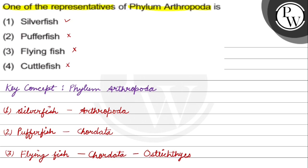So the organism which represents phylum Arthropoda is silverfish. The final answer of this question is option number 1, silverfish. Hope you understood it well. Best of luck!